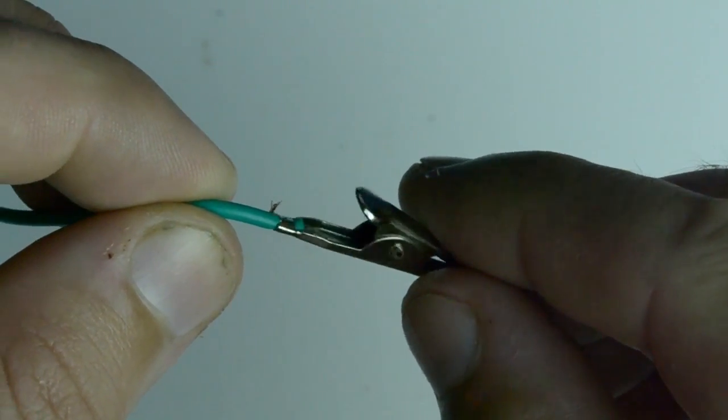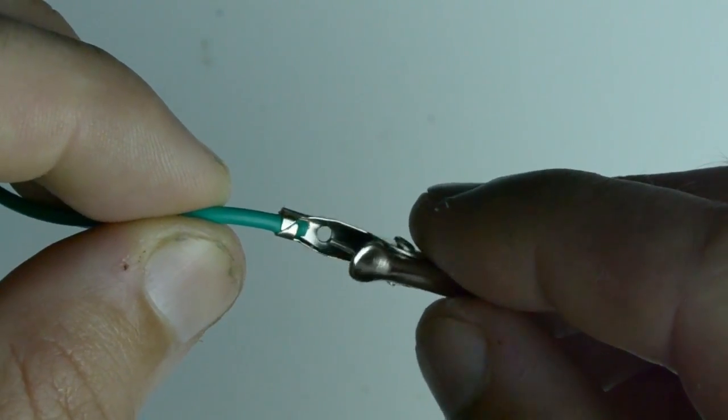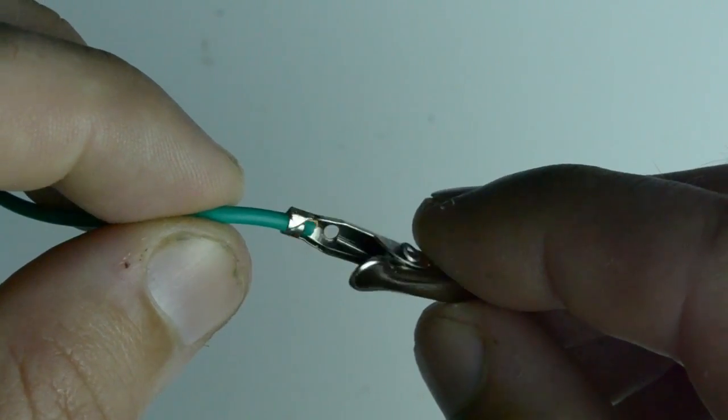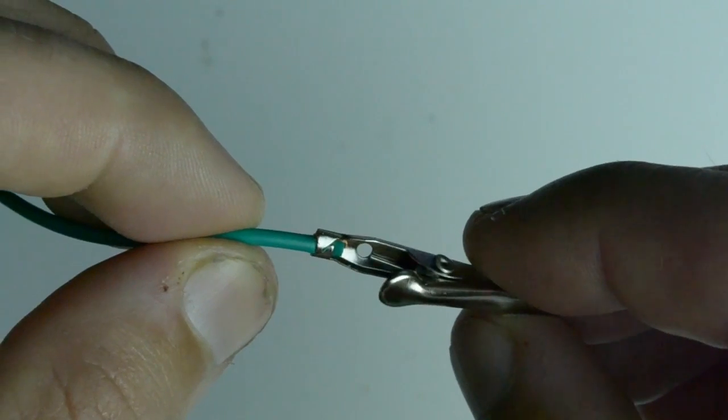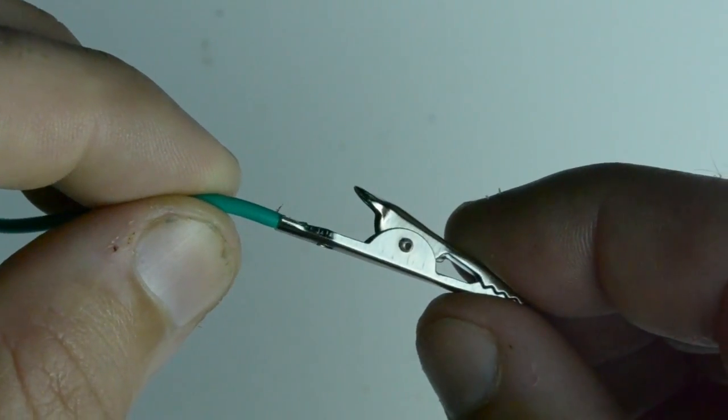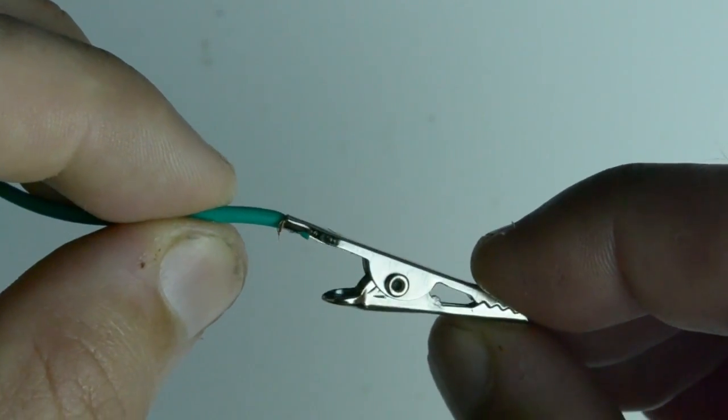You see that crimp? Well the wire is actually just folded underneath that and that's the only thing that makes connection. So obviously it's not as good of a connection as soldering. So I'm going to take this apart and solder it up.